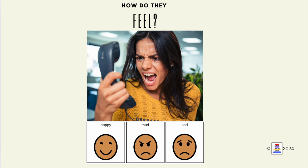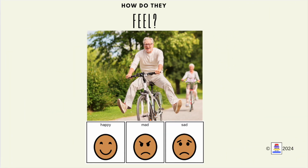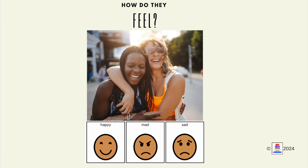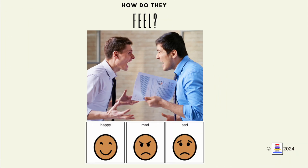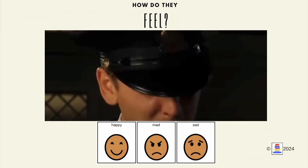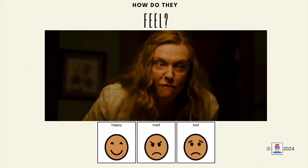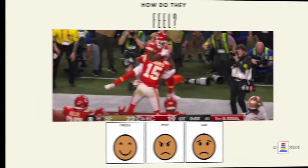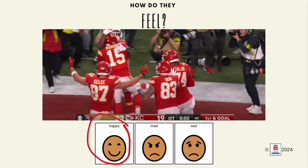How does this person feel? They feel mad. How does this person feel? They feel happy. How does this person feel? They feel happy. How does this person feel? They feel mad. How does this person feel? They feel sad. How does this person feel? They feel mad. How does this person feel? They feel happy.